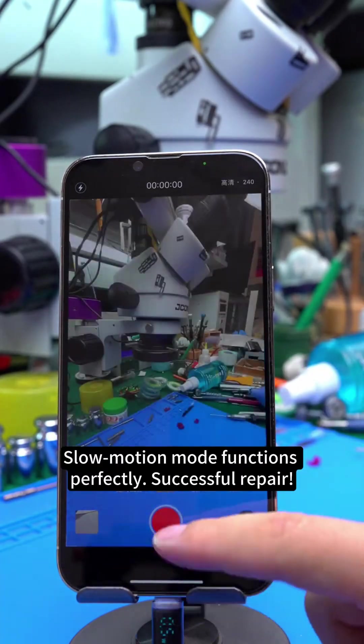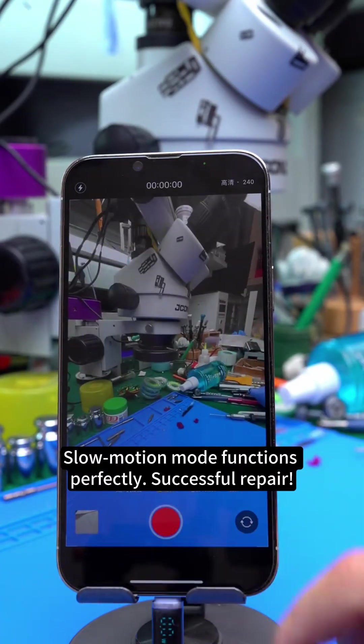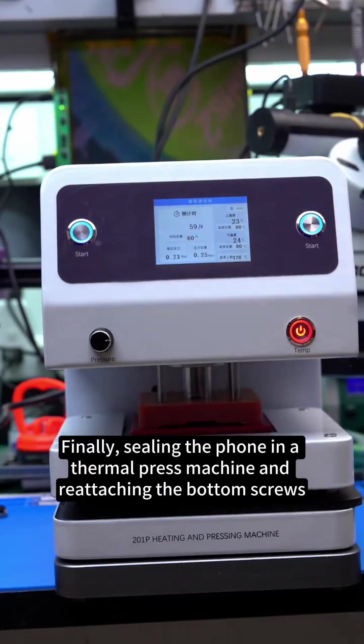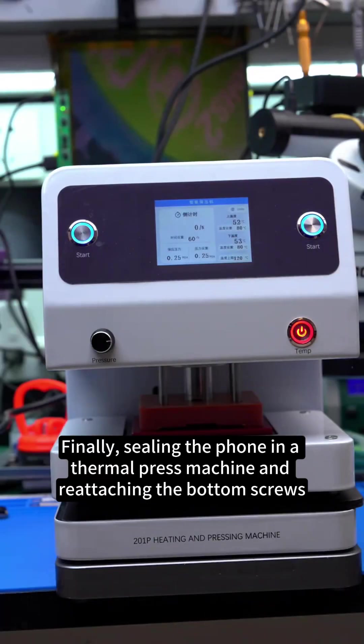Slow motion mode functions perfectly. Successful repair. Finally, sealing the phone in a thermal press machine and reattaching the bottom screws. All phone parts and tools are available at tivo.com.